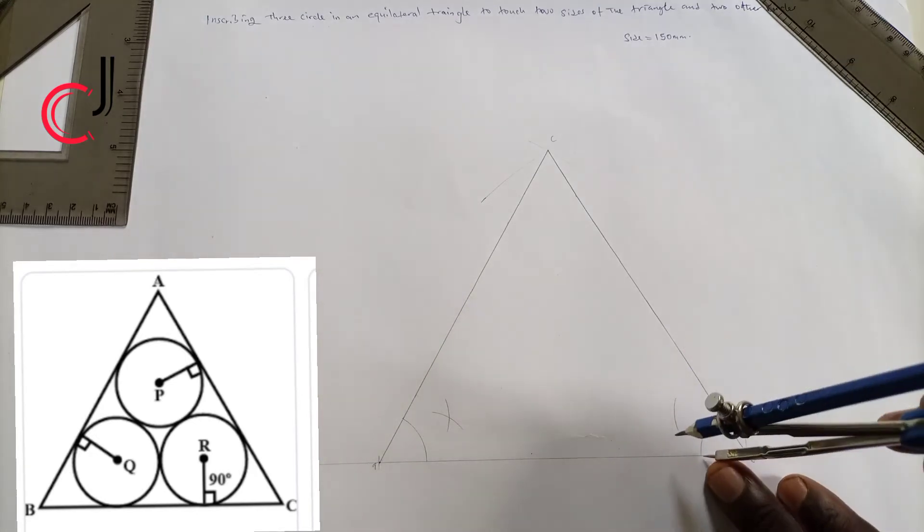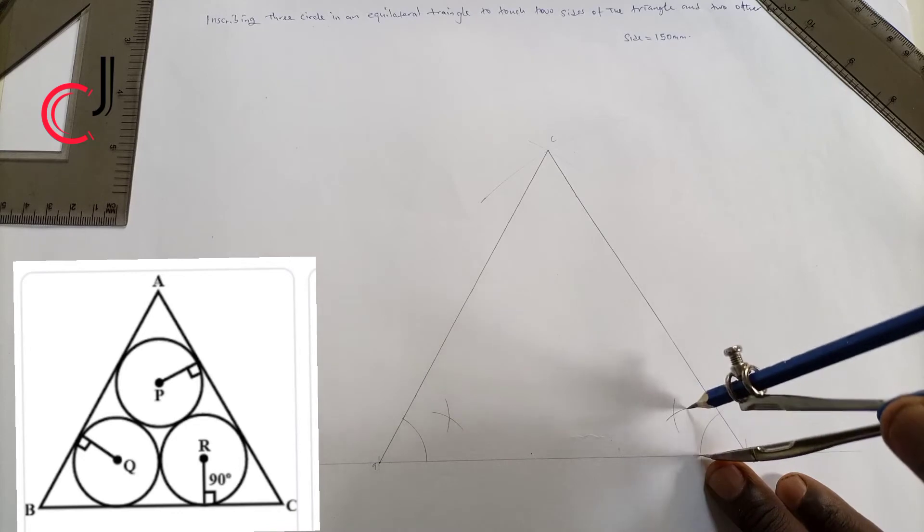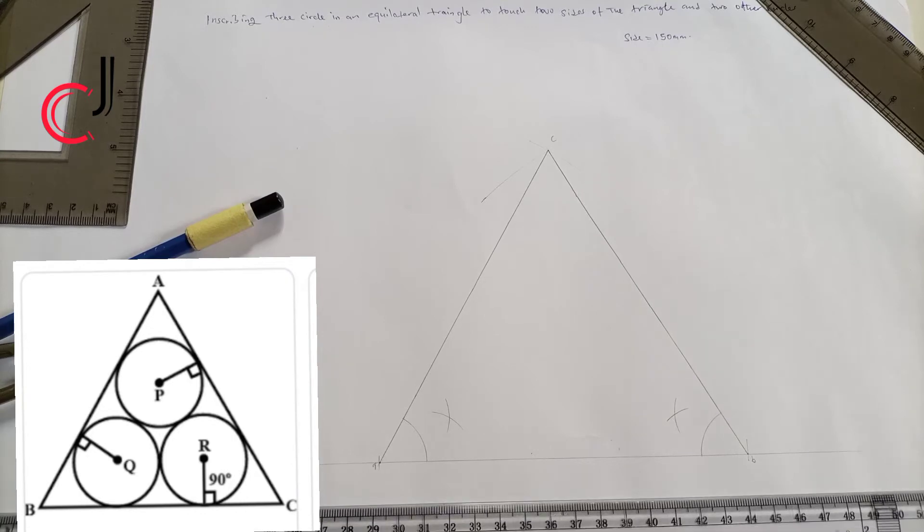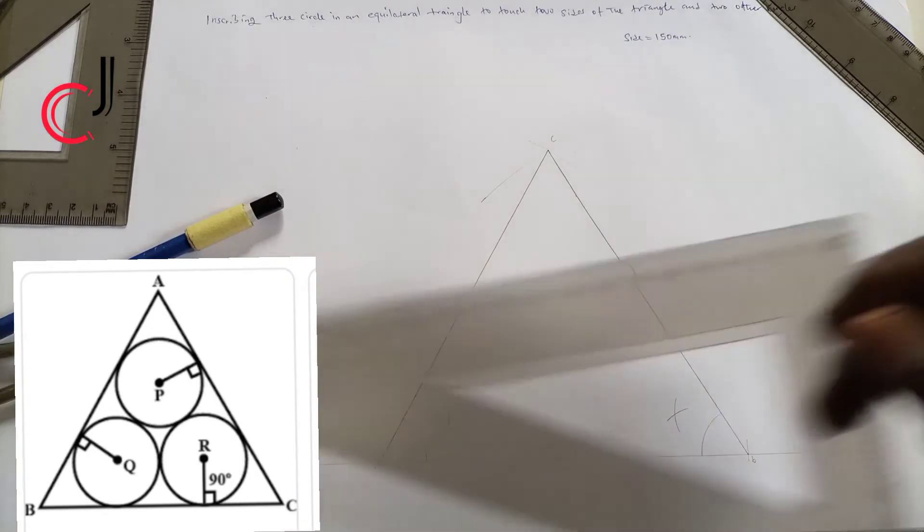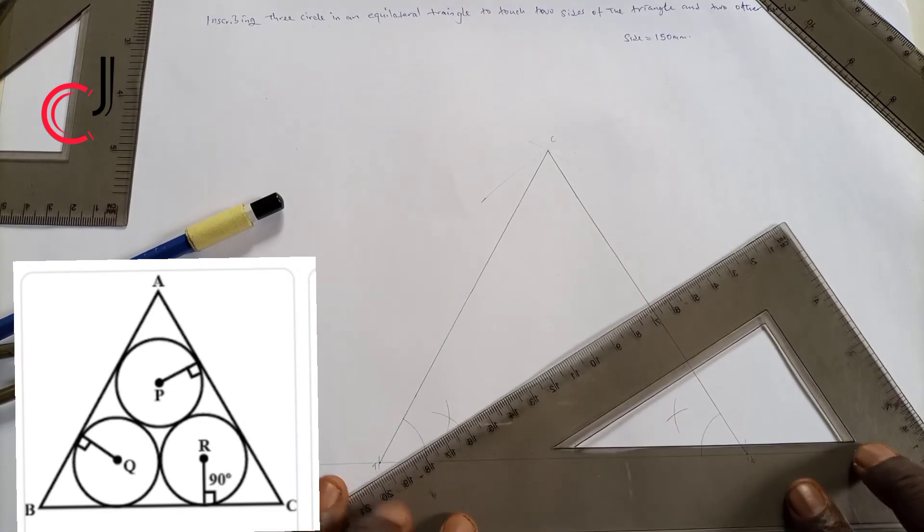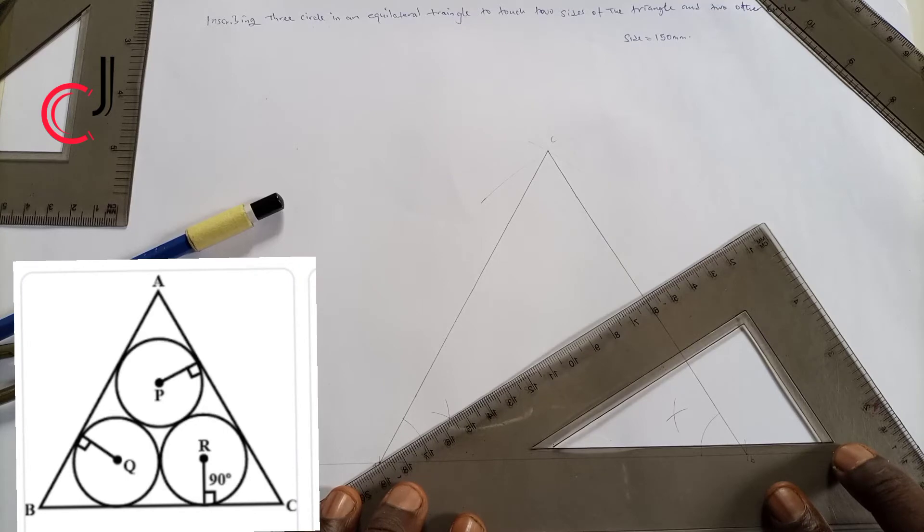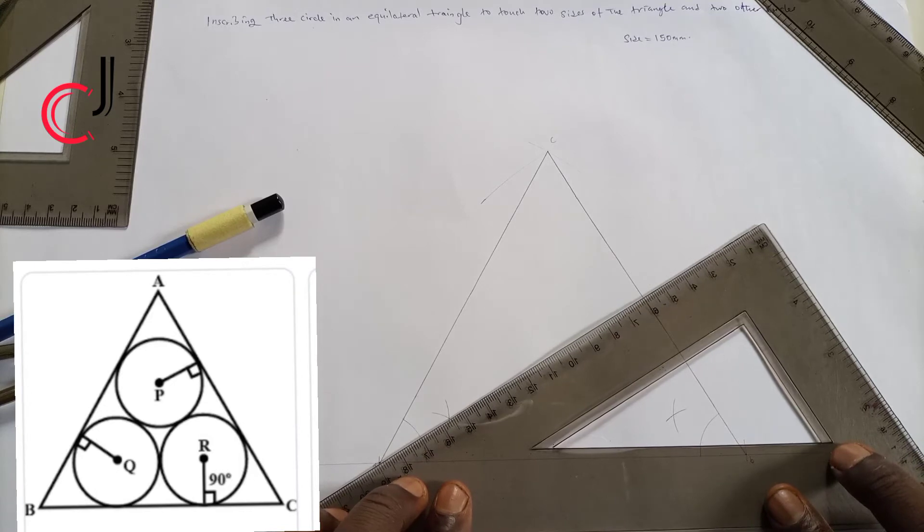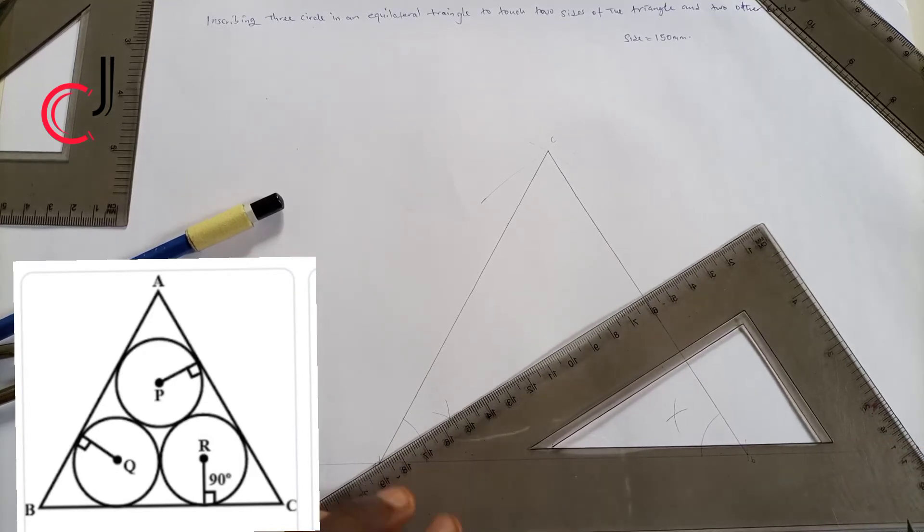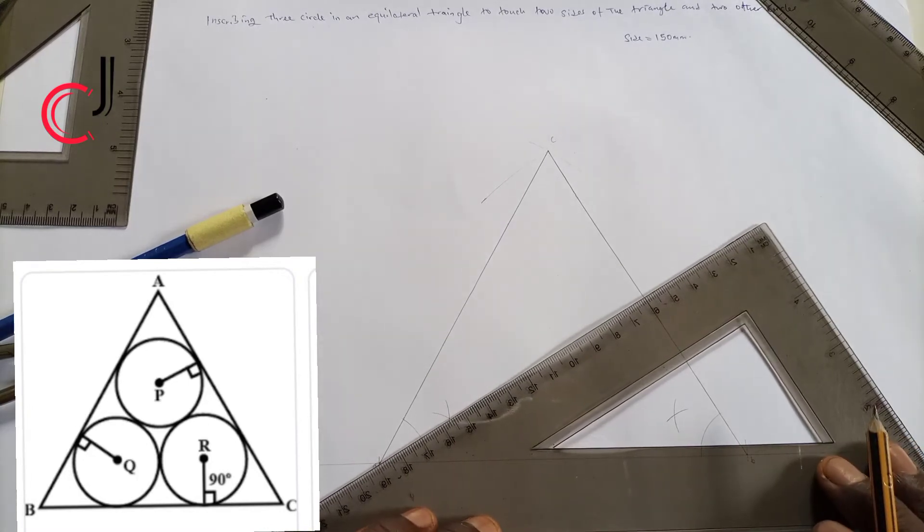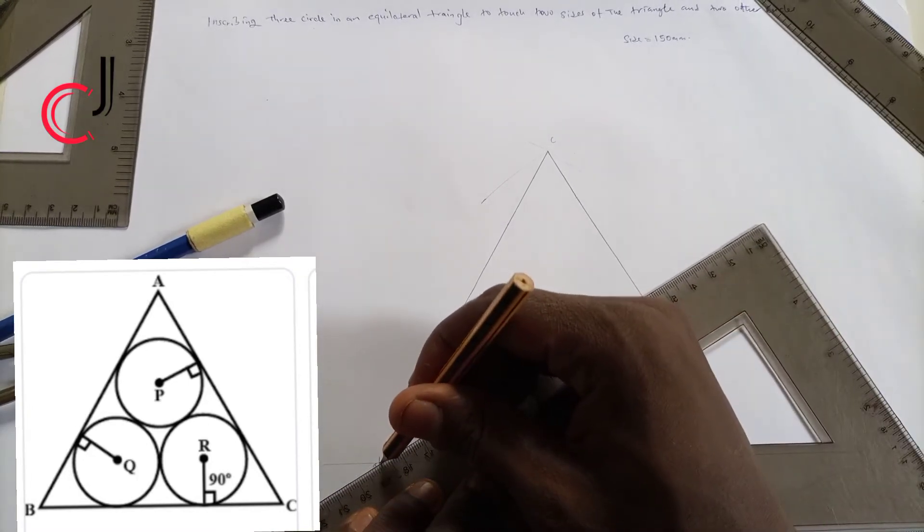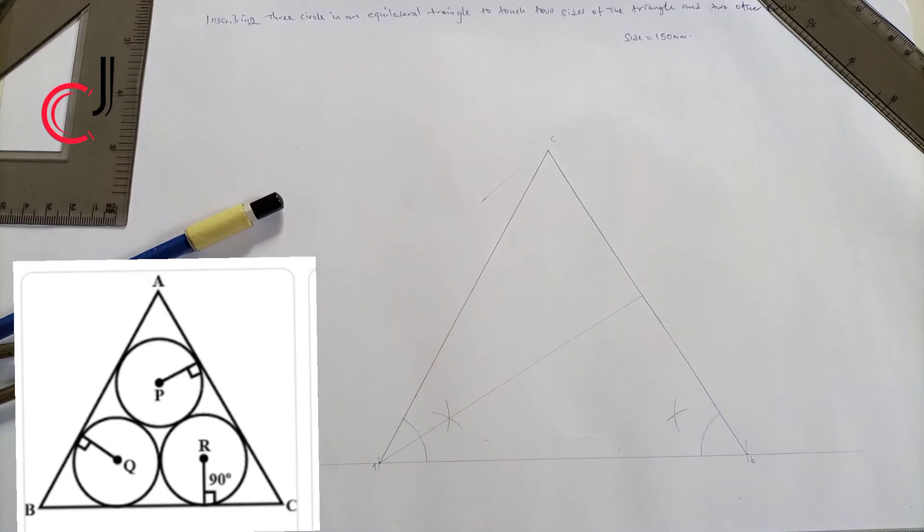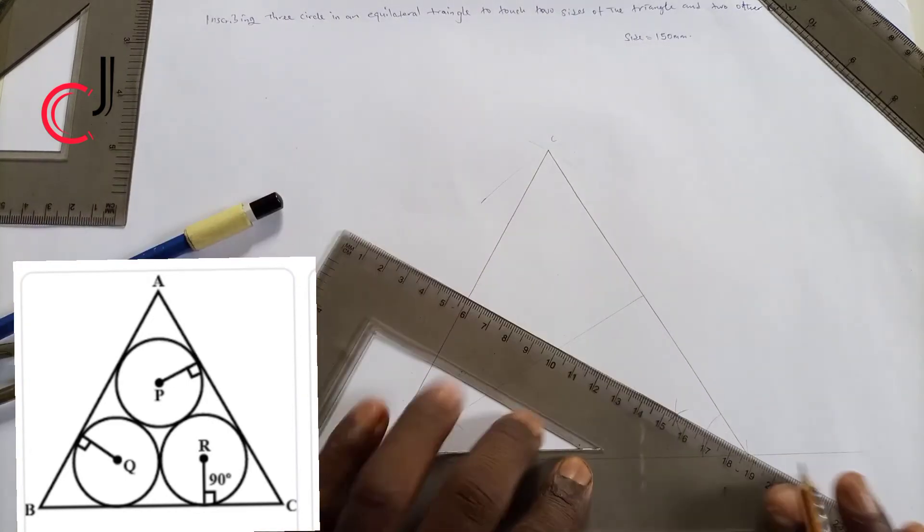Now use the set square to join it properly. Set it very well so it has to pass through the point. Make sure you don't make a mistake because accuracy is the key over here. Now do the same to this point also.